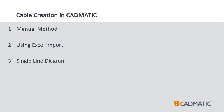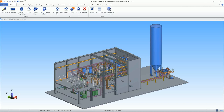There are three methods for creating cables inside Cadmetic Cable Router, and using automatic or manual routing we can route those cables. The first method is manual creation, where we can fill in the cable information one by one, and after creating those cables we can route them using the automatic routing. We will now see a video demonstrating how cables can be created manually inside Cadmetic.